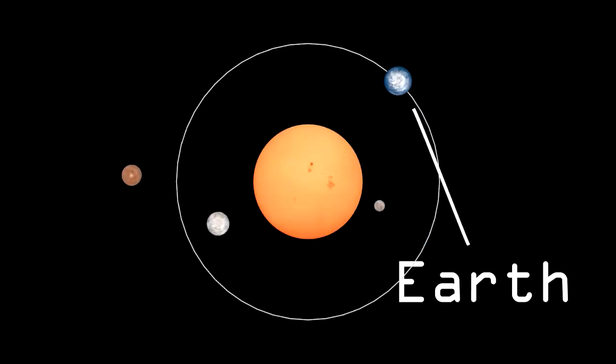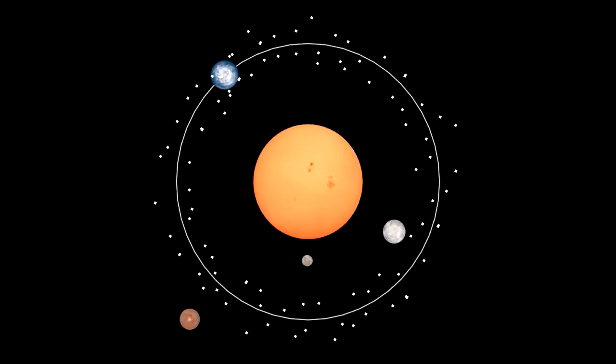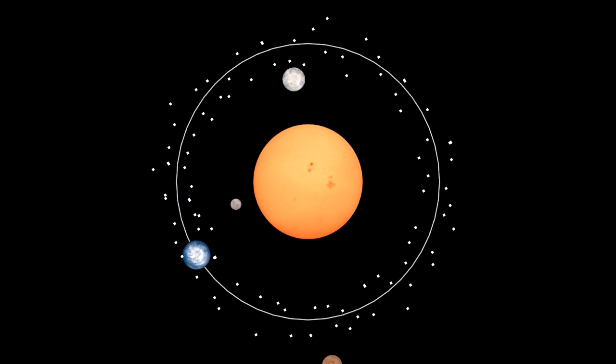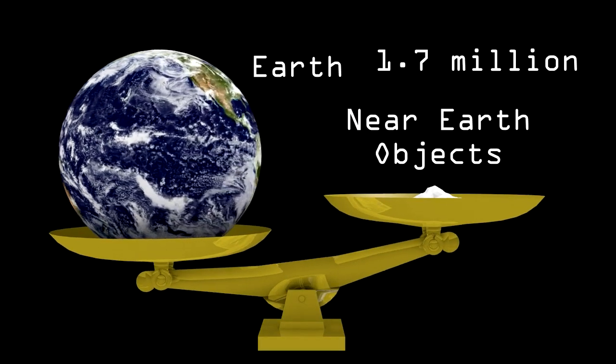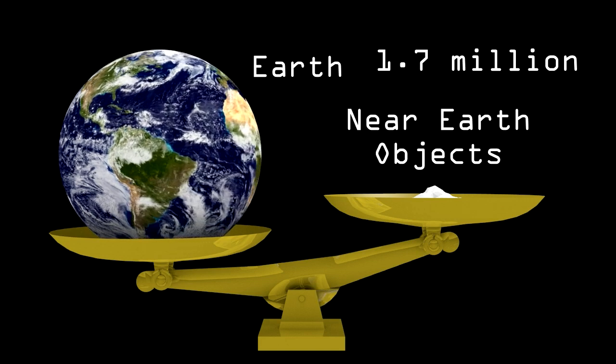To put this into perspective, there are thousands of relatively small asteroids, called near-Earth objects, around Earth's orbit. But the Earth's mass is 1.7 million times the rest of the mass in its orbit.